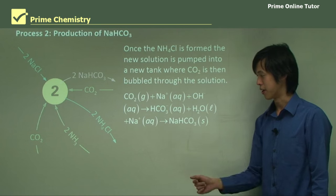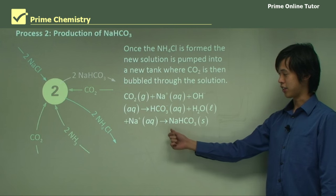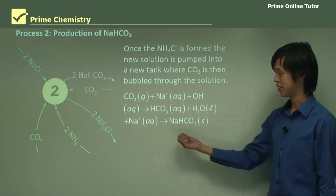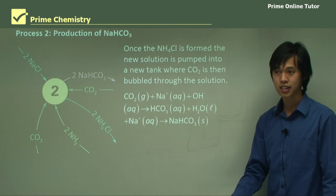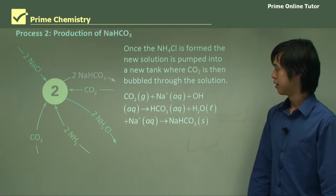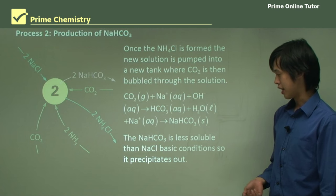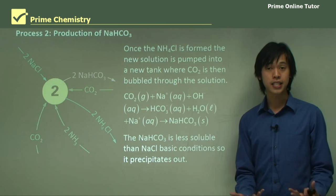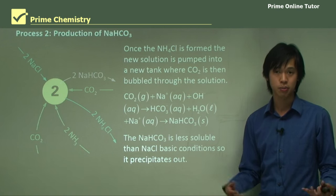The CO2 creates hydrogen carbonate ions, and the final product is the production of NaHCO3 — sodium hydrogen carbonate. That's the main product of this part of the process. We produce NaHCO3 by adding carbon dioxide to the ammoniated brine solution. NaHCO3 is less soluble than NaCl under basic conditions, so it precipitates out of solution.